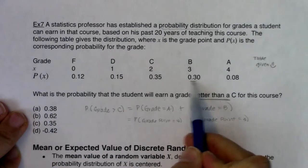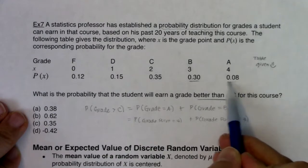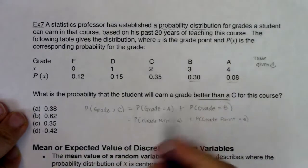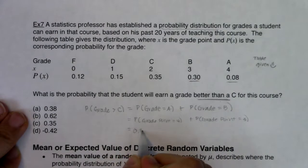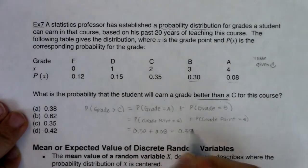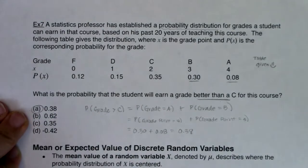The probability of earning a grade point of 3 is 30%. The probability of earning a grade point of 4 is 8%. So I'm going to do 0.30 plus 0.08, and my end answer is 0.38. Option A.